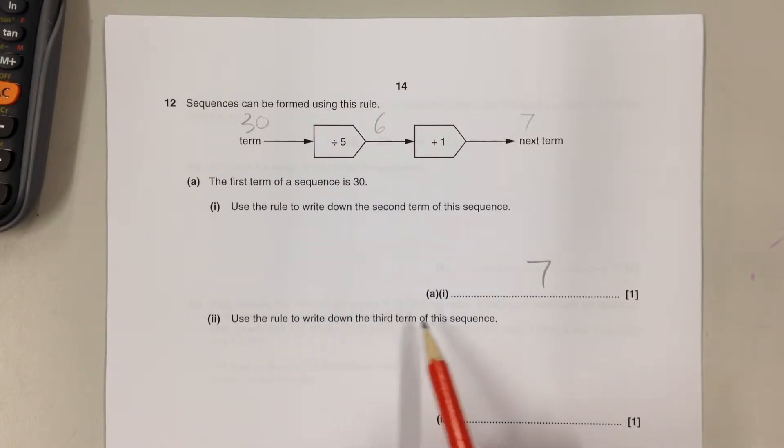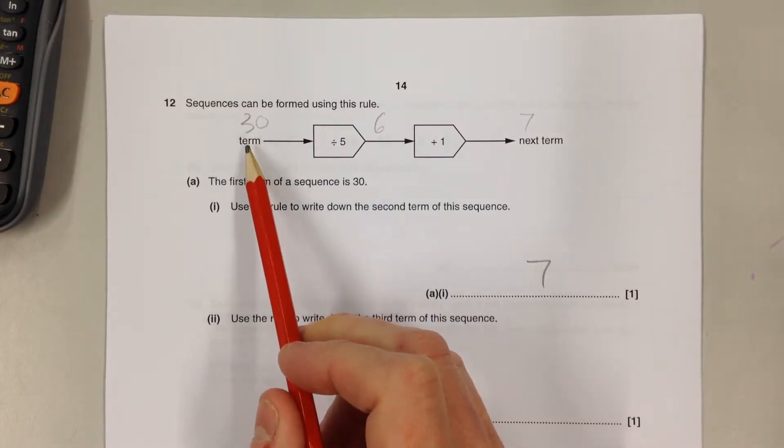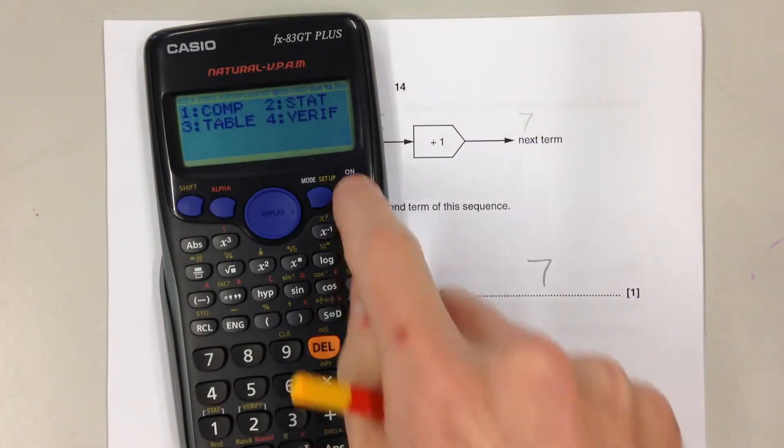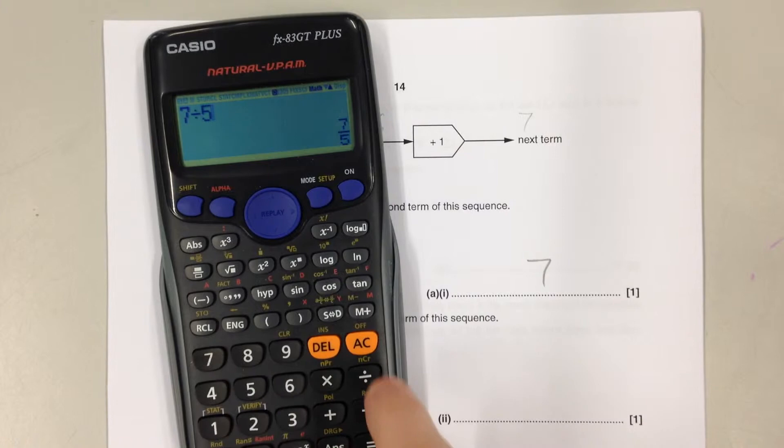Use the rule to write down the third term of this sequence, so we need to put 7 back in, divide it by 5, and then add 1. 7 divided by 5 is 1.4, add 1, it's 2.4.